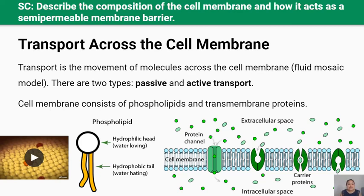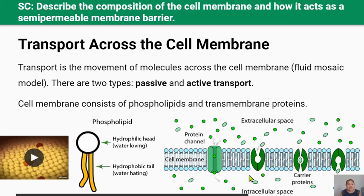Remember from a previous lesson that the cell membrane, sometimes referred to as the plasma membrane, encloses both plant and animal cells. It protects the cytoplasm and contents of the cell, acting as a boundary between the cell and its external environment. Also remember that the cell membrane is semi-permeable, therefore it can only let certain molecules pass through. The phospholipid bilayer is studded by proteins that go right through the bilayer and create a pathway for the transport of materials into and out of a cell. These proteins are called transmembrane proteins.